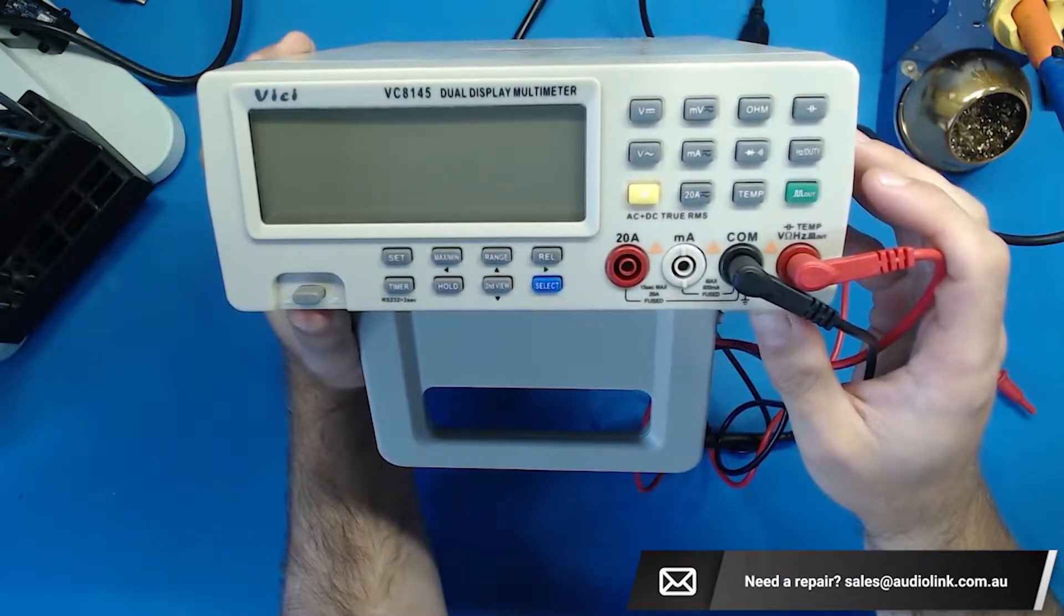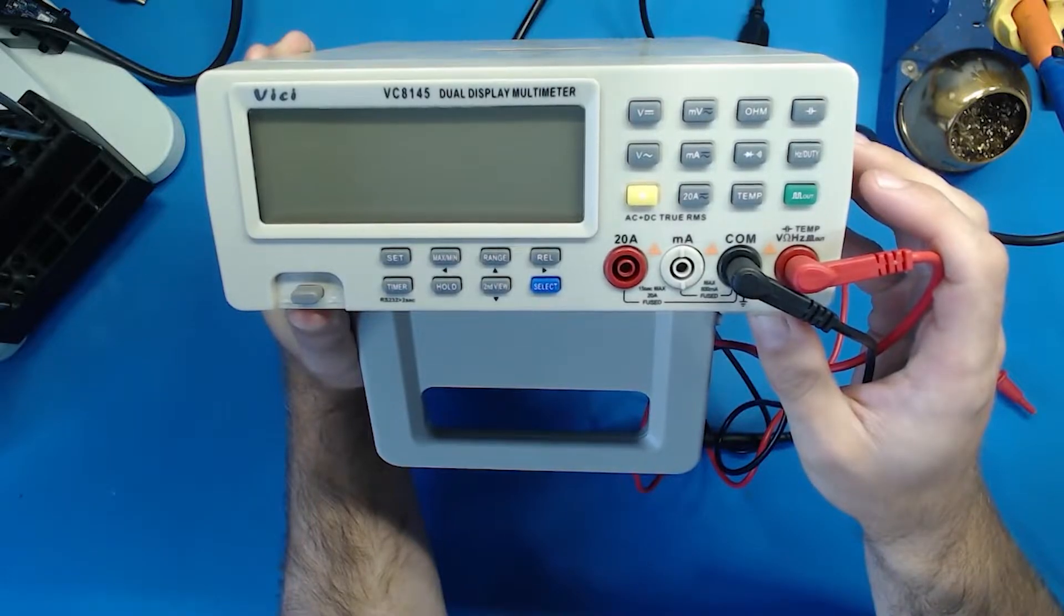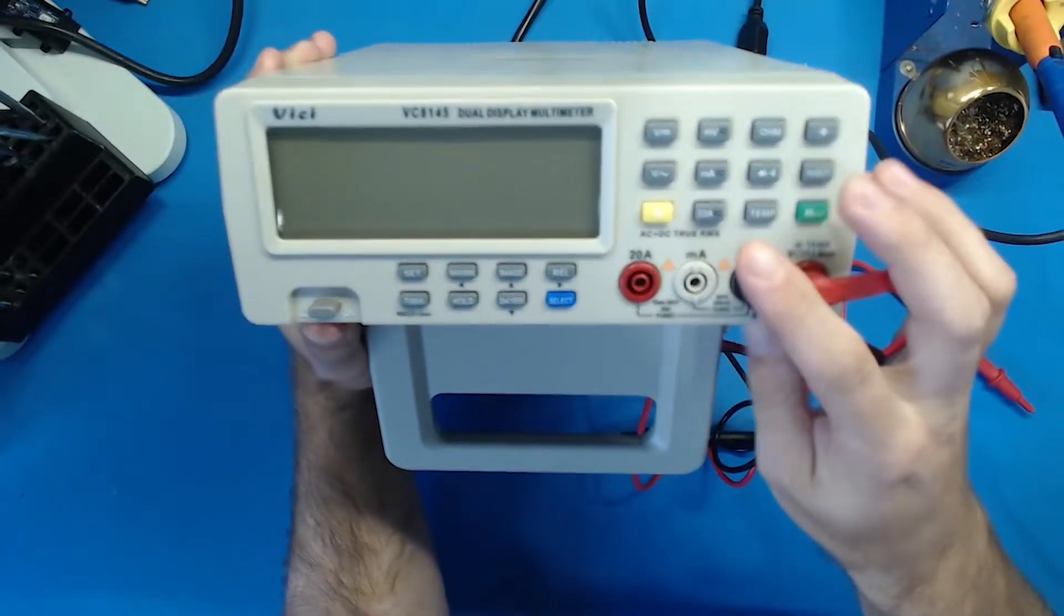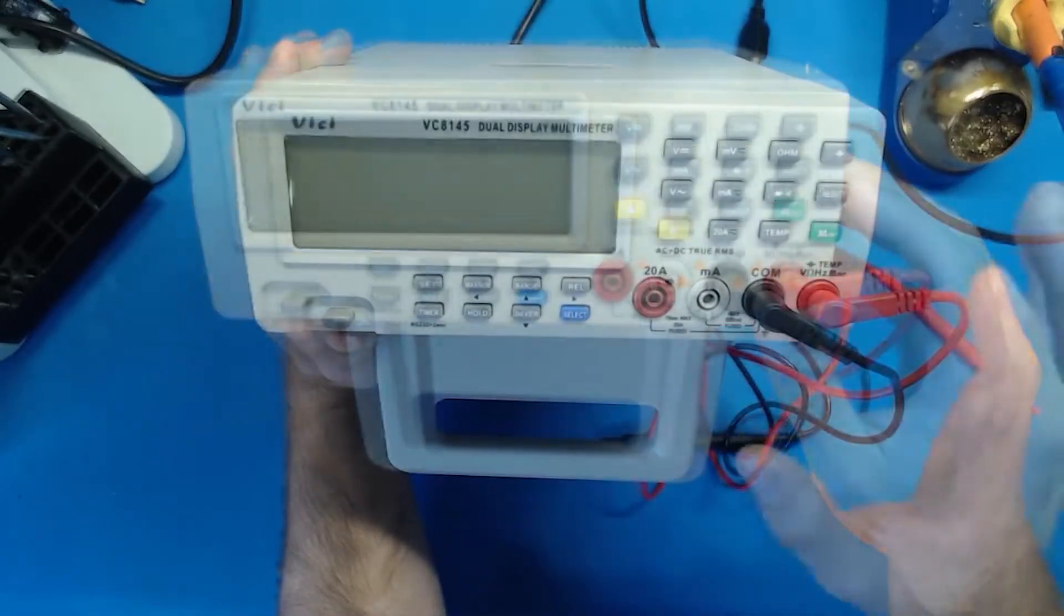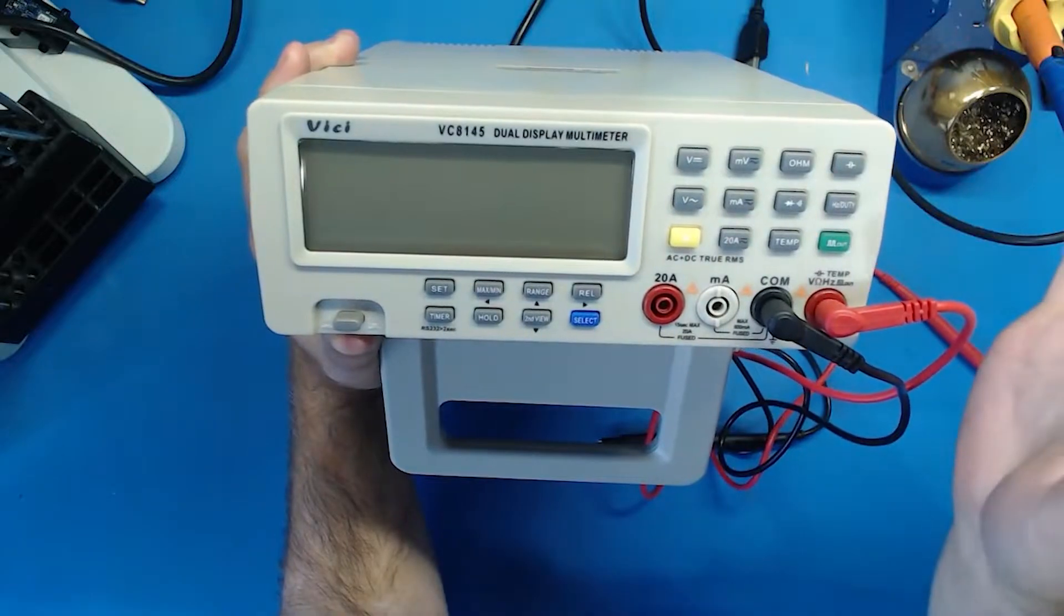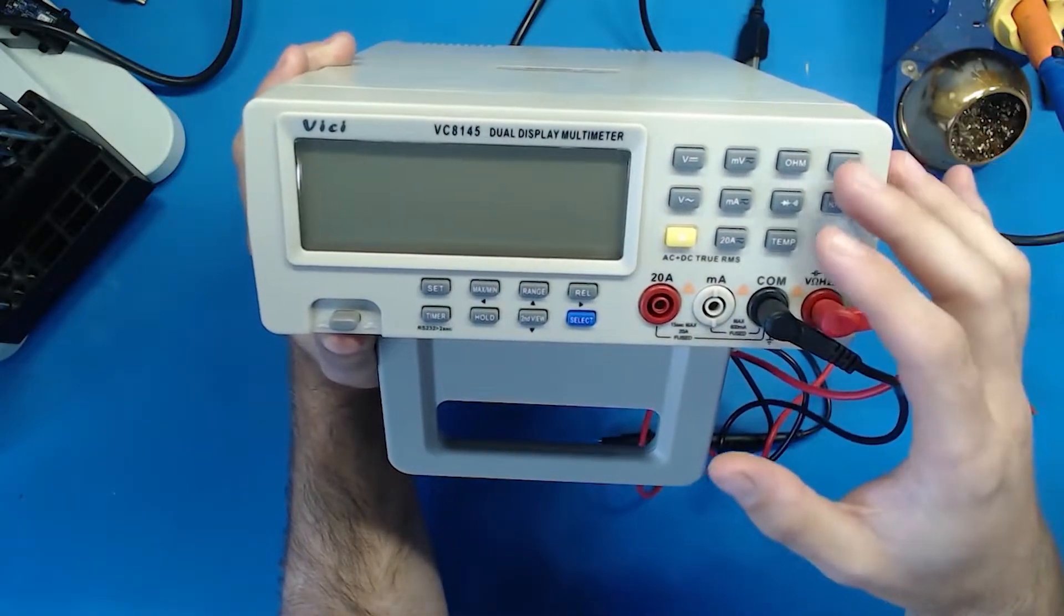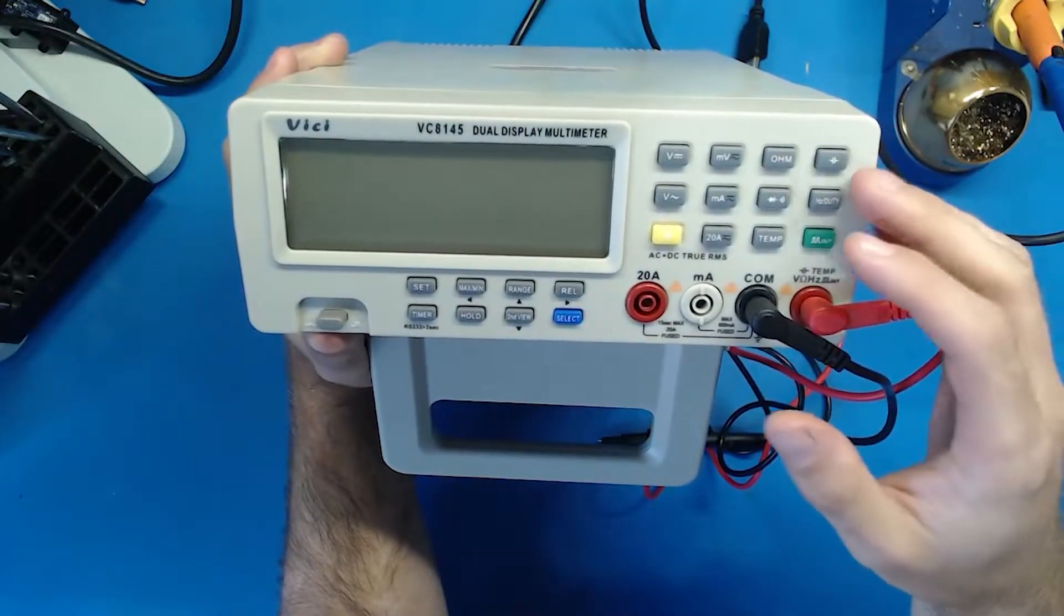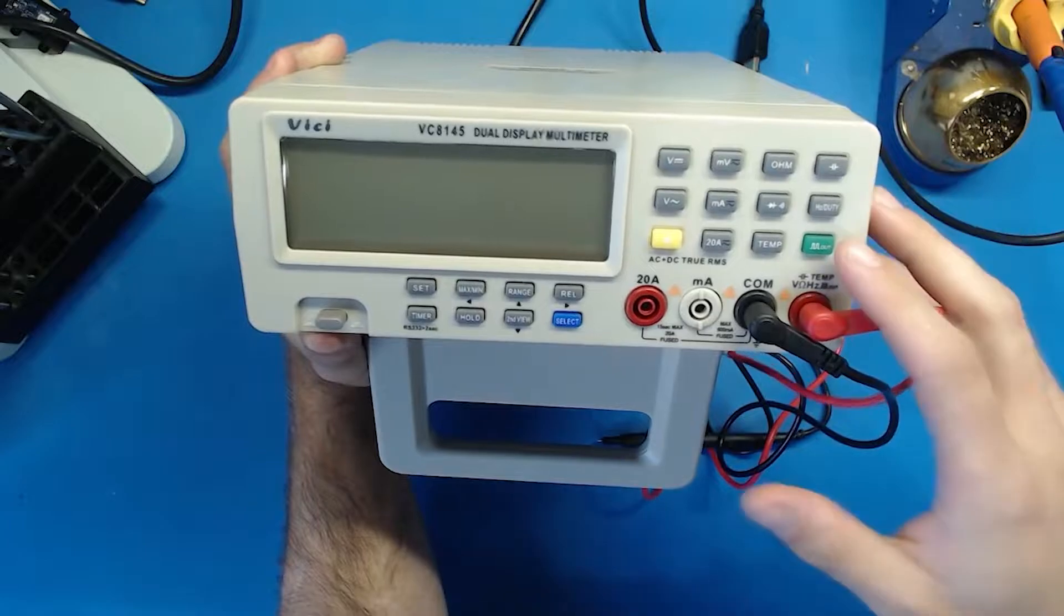So the first issue is that this thing beeps a lot and I mean a lot. Anytime you press any of the function buttons, continuity mode, when you go into voltage mode and you have it set to auto if it's outside of the range and it has to go up another range it will beep as well. So it just beeps all the bloody time.